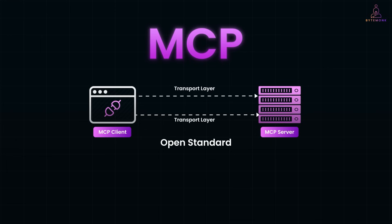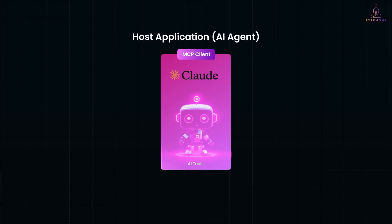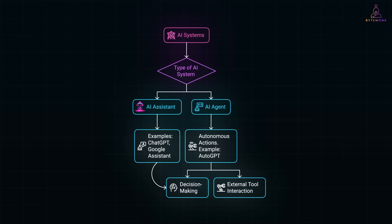MCP follows a client-server model similar to how a web browser communicates with a website. In MCP's world, we have a host application or the AI agent — the main AI-powered system, like a chatbot, coding assistant, or a voice assistant. The terms AI agent and AI assistant are often used interchangeably, but there is a subtle difference. An AI assistant is a broad term referring to any AI system that helps users perform tasks — for example, ChatGPT, Google Assistant, Microsoft Copilot, or Replit Ghostwriter. An AI agent is a more specific term used in AI development, referring to an autonomous system that can make decisions, interact with external tools, and complete tasks without direct human input. So a basic AI assistant just answers questions, while an AI agent can take autonomous actions like fetching data, modifying files, or executing code.